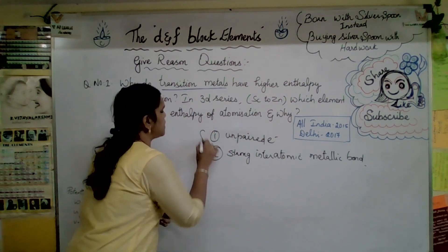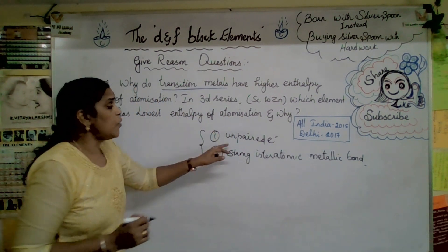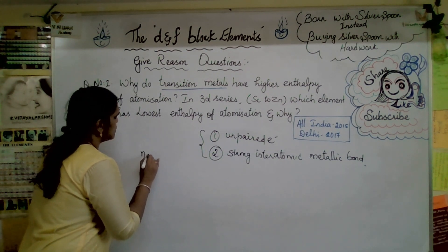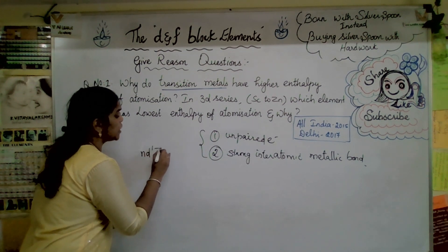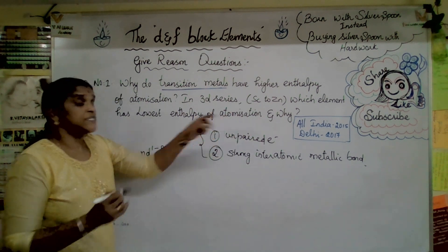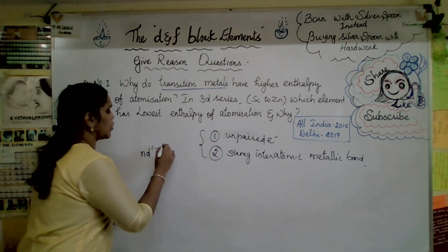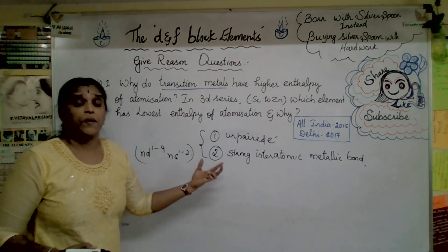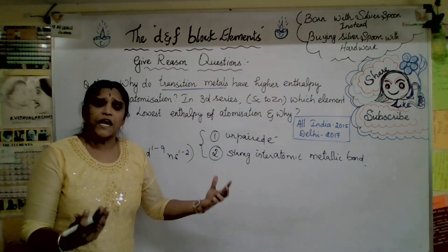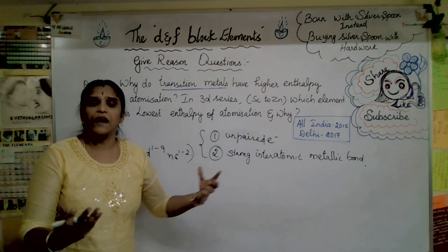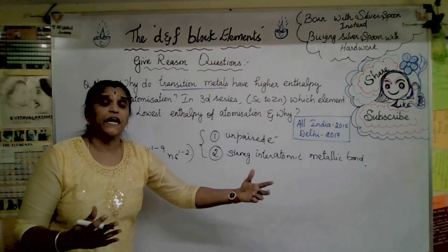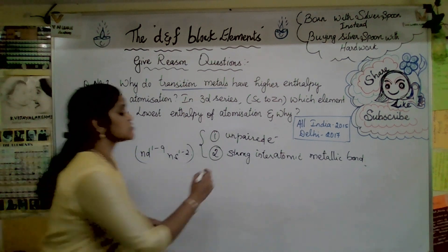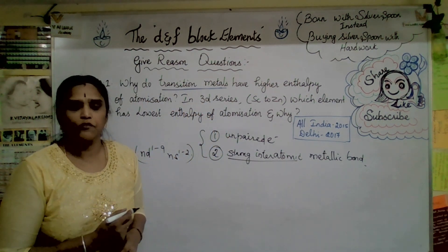The larger number of unpaired electrons reason applies because in nd¹ to nd⁹ configurations (scandium to copper), n=1 to 2, there are unpaired electrons. Due to these unpaired electrons, atoms interconnect with other atoms to form a strong inter-atomic metallic bond.